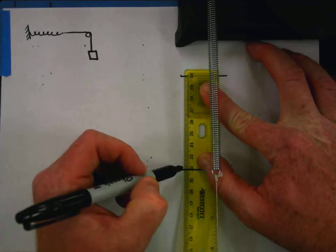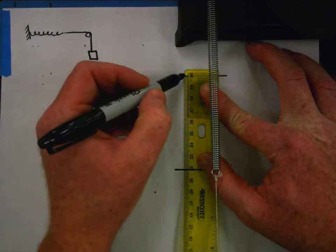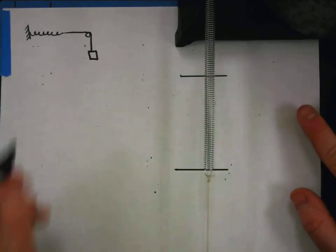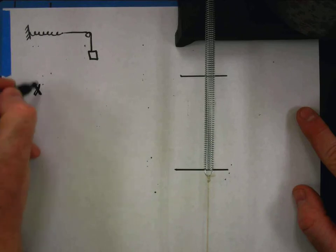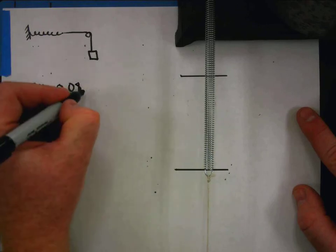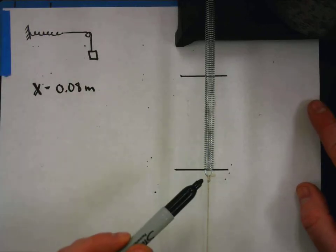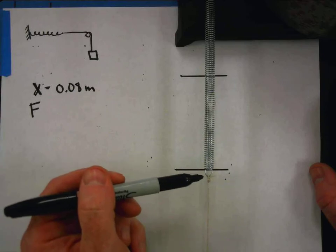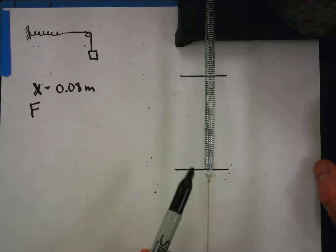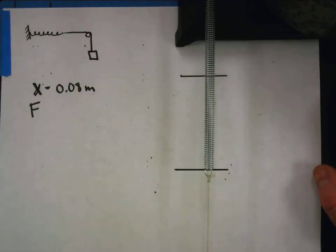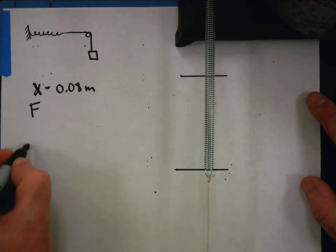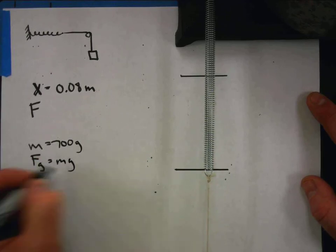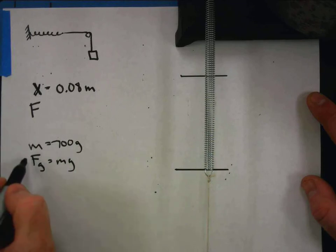From roughly 22 centimeters up to roughly 30 — so that's a displacement of 8 centimeters, or 0.08 meters. That is our x value. The force being applied comes from the mass on the end of the spring: 700 grams. The weight of that is mg, and that happens to be the force at this moment — the spring end is at equilibrium with the spring force back and this tension.